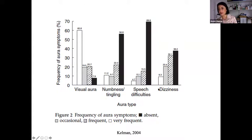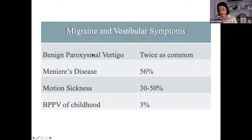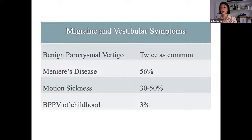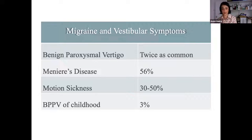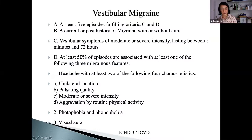Benign paroxysmal positional vertigo — a little otolith in the ear — has twice the rate of migraine co-occurrence. Ménière's disease, with associated deafness worsening with each attack, has migraine in half of cases. Motion sickness occurs in up to 50% of those with vestibular symptoms. There's also a childhood group — paroxysmal vestibular disorders of childhood — which evolves into migraine disorder in adulthood.